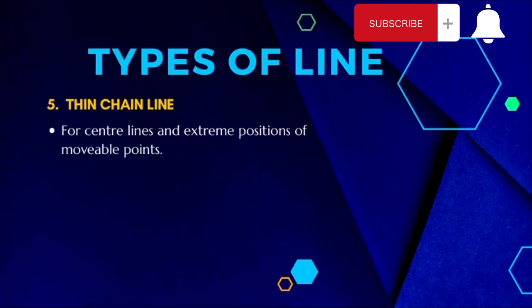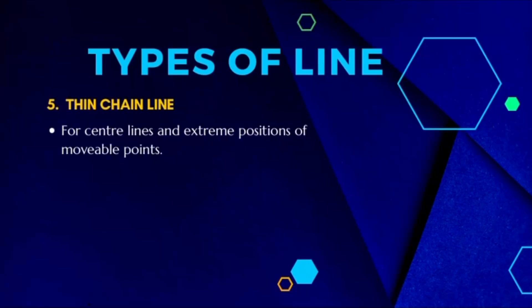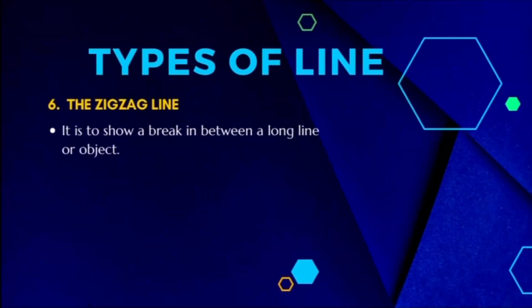The next one is the thin chain line. The thin chain line is mainly used to show center lines and extreme positions of movement points.